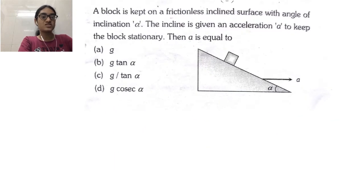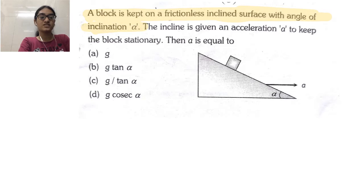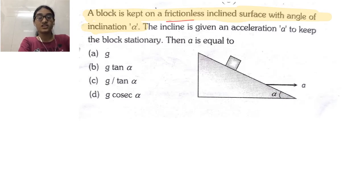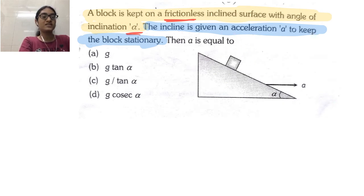Moving to the next problem. A block is kept on a frictionless inclined surface with angle of inclination alpha. This is a frictionless surface so friction will not act here. The incline is given an acceleration A to keep the block stationary - so to prevent the block from moving, the incline is given a forward acceleration A.